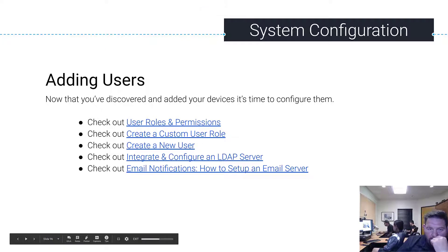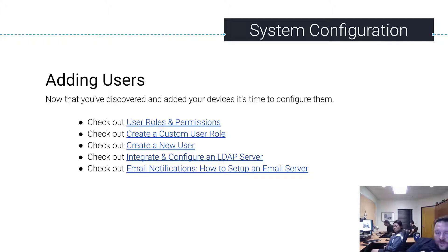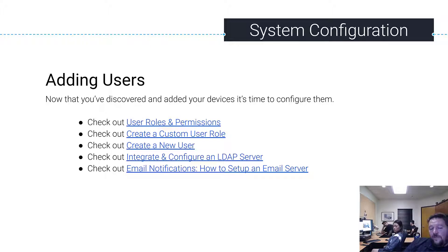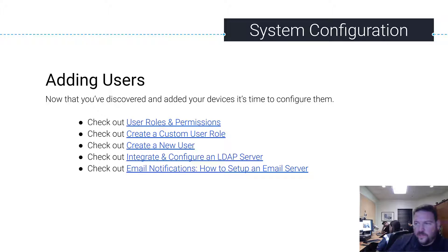We just went over advanced PTZ and standard PTZ. One thing we haven't gone over is user management, so let's go over it quickly. Now that you've added and discovered all your devices and set up everything, you need to add some users. There are user roles and permissions, creating custom user roles, creating new users, integrating an LDAP server, email notifications, and how to set up an email server. We'll go over user roles and permissions primarily; the rest are links to articles on custom roles, LDAP, and email server setup.